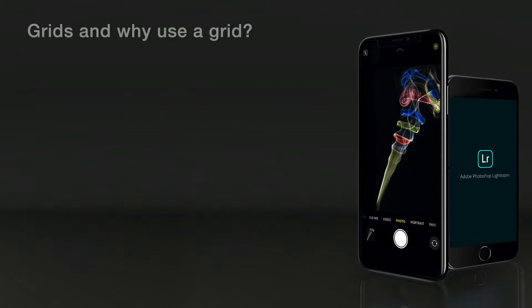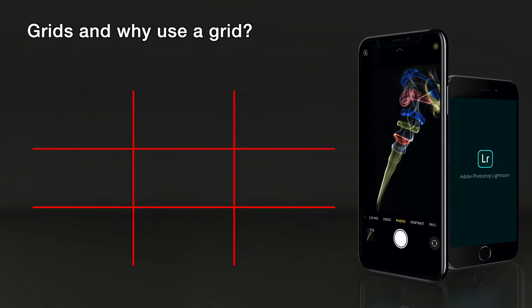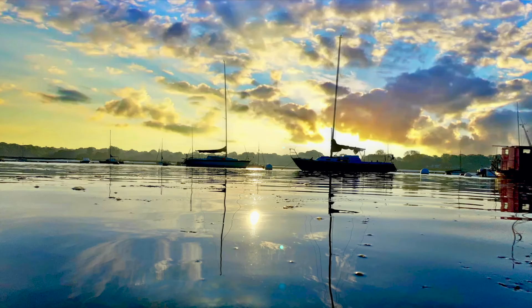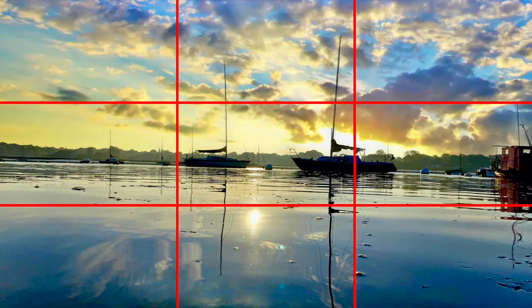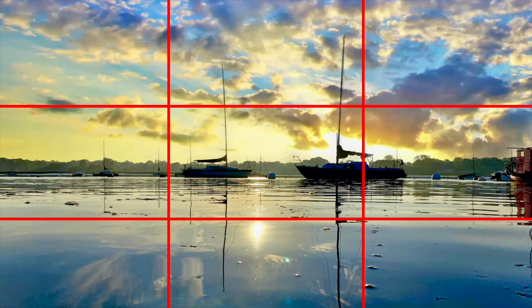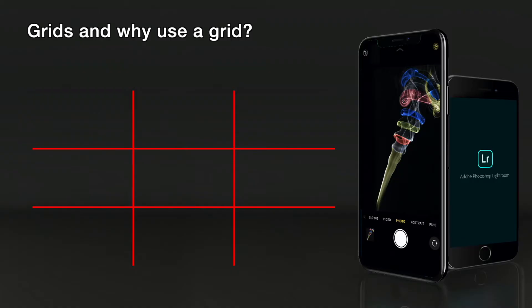Let's talk about grids and why do you need to use a grid? Grids are very useful for checking the photo's horizon and that they're straight, and give you a guide to the rule of thirds. Have you ever taken a photo of a building or a landscape to see that the actual horizon isn't level after you've taken it? Yes, you can correct it in post afterwards, but you do lose some of the image from the left and the right. So as always, it's best to get it right in camera first time, and to do that, a grid helps you do that.